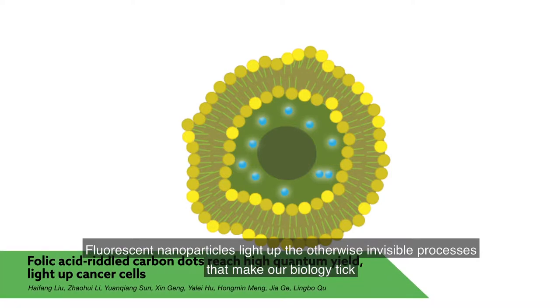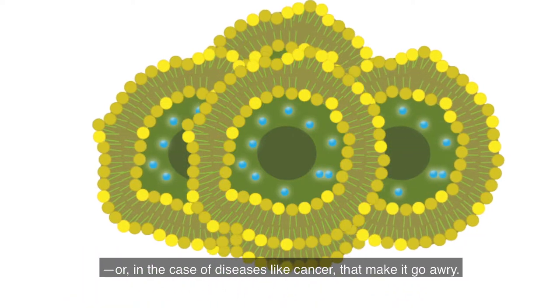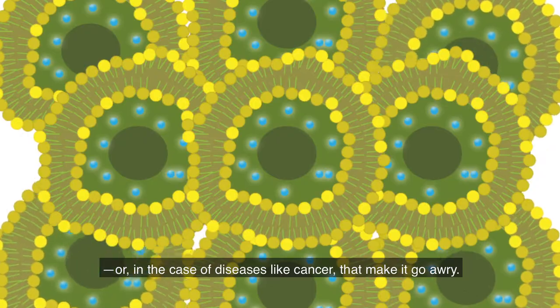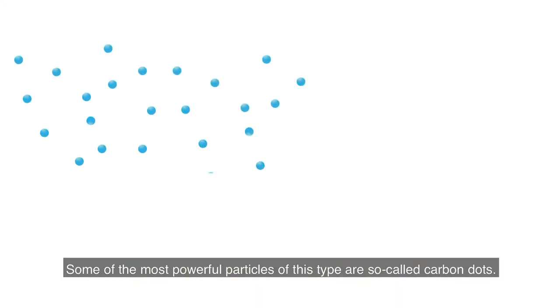Fluorescent nanoparticles light up the otherwise invisible processes that make our biology tick, or in the case of diseases like cancer, that make it go awry. Some of the most powerful particles of this type are so-called carbon dots.